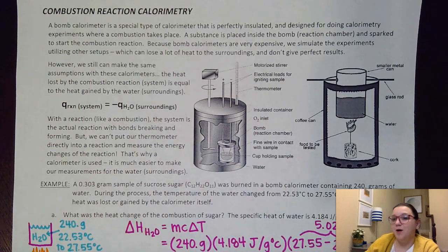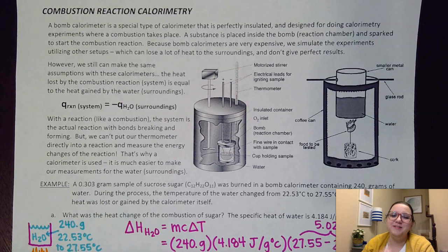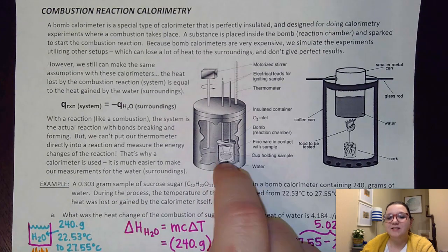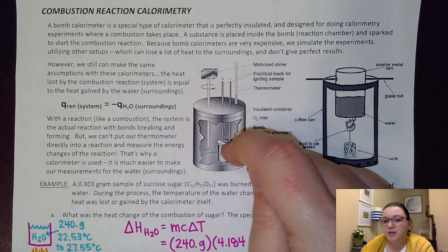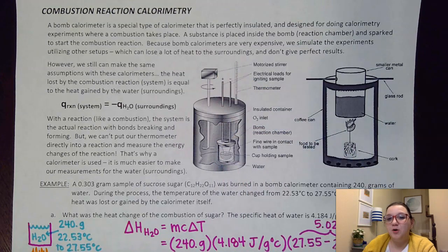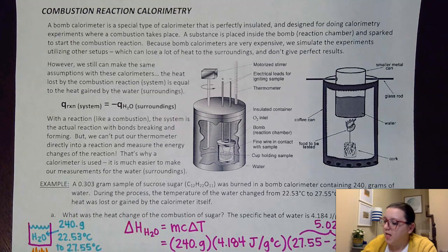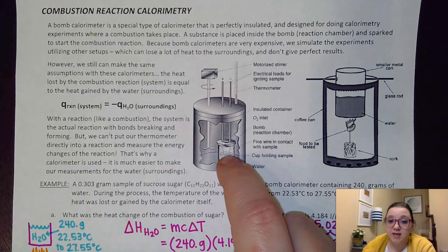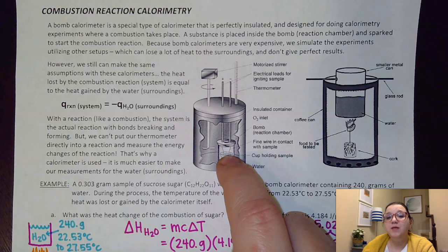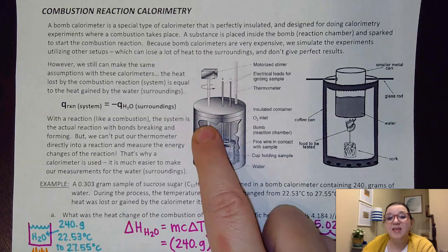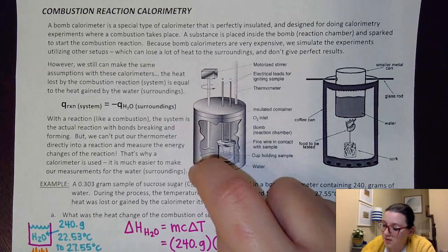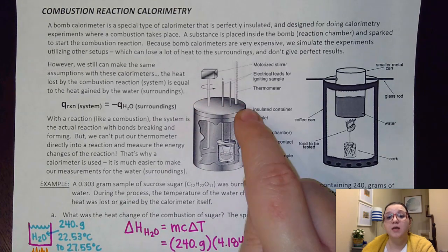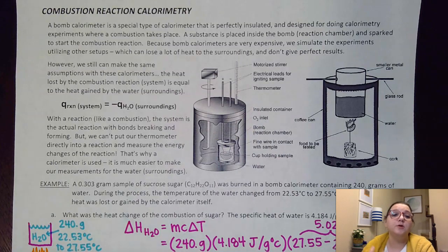Here's an example of a bomb calorimeter. It has some very distinct traits to it. We have an inside container where I could put my fuel that I'm trying to combust, trying to burn. I have some electrodes running into it so I can get that burning process started, and then I have water surrounding that container. The water would be what's absorbing the heat that this combustion process is losing. So then that water is held in place by an external canister, so that's the outside of the calorimeter itself.